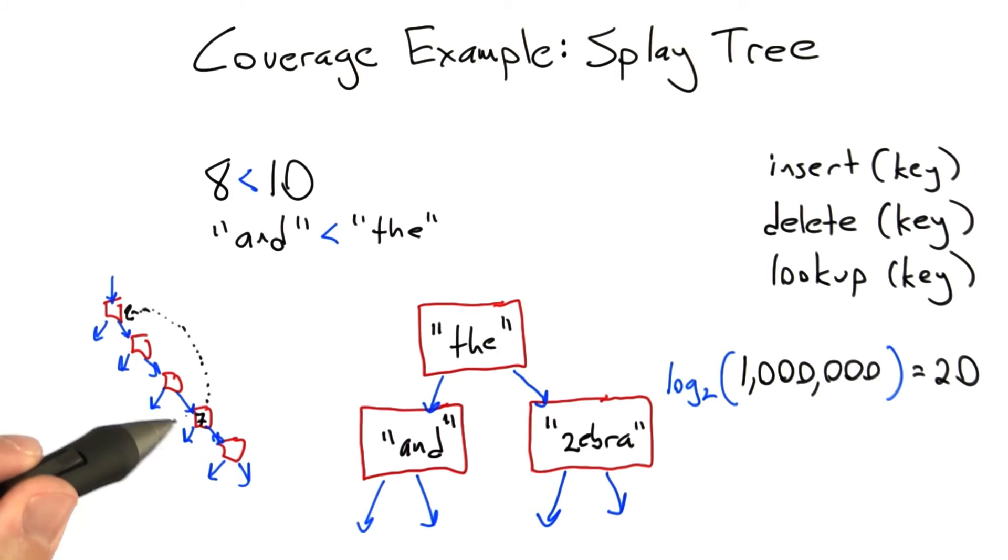But the point is that frequently accessed elements end up being pushed towards the root of the tree, and therefore future accesses to those elements become even faster.